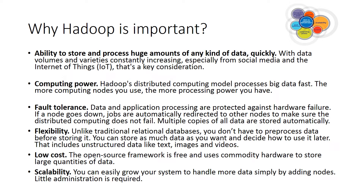Third is fault tolerance: Hadoop data and application processing are protected against hardware failure. If a node goes down, jobs are automatically redirected to another node to ensure distributed computing does not fail, and multiple copies of all data are stored automatically. Fourth is flexibility: unlike traditional relational databases, you don't need to pre-process data before storing it — you can store as much as you want and decide how to use it later.